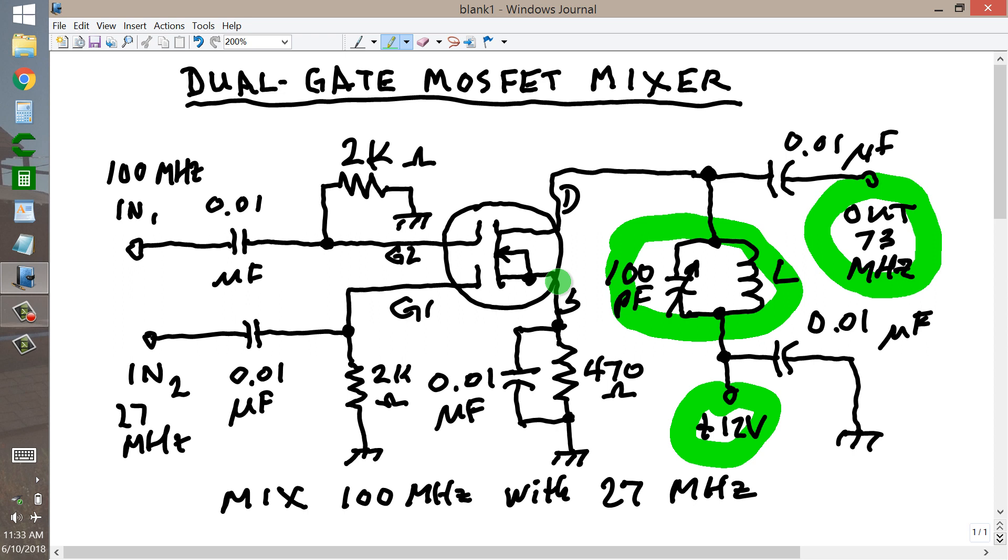So, that is my little idea for the day. General component values, these are not intended to be exact, but approximate. But the circuit is representative of a mixer at frequencies like this, using a dual gate MOSFET, Stan Gibalisco, W1GV saying 73.